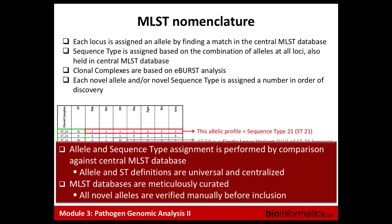Alleles are named essentially in order of discovery, because of the centralized database. Different researchers would investigate their strains, find a new allele, submit it to the database, and it would be appended to the list with the allele number incrementing by one. When typing your strain in the lab, you sequence the seven genes and compare against the database to look up the relevant names. To make these databases work, they were carefully curated by humans and still are — these are something still actively in use.